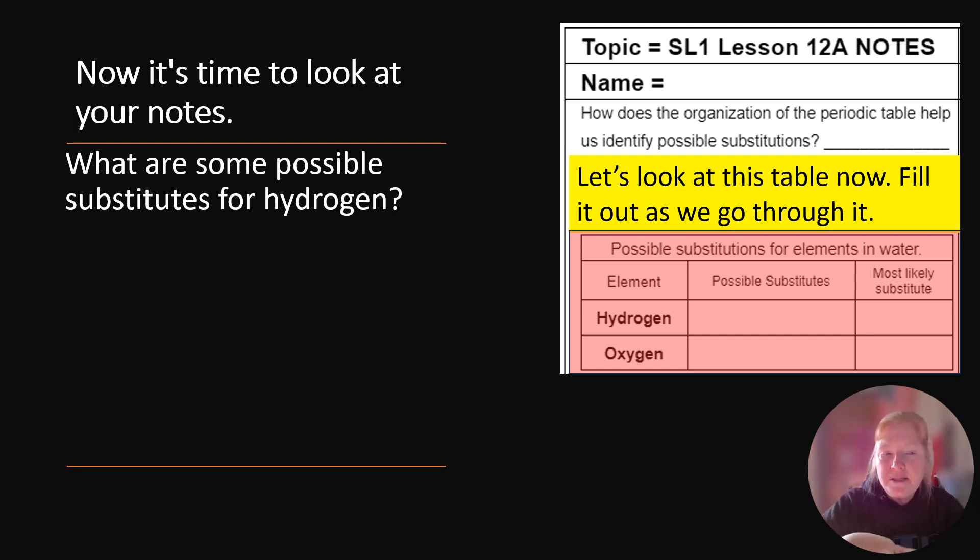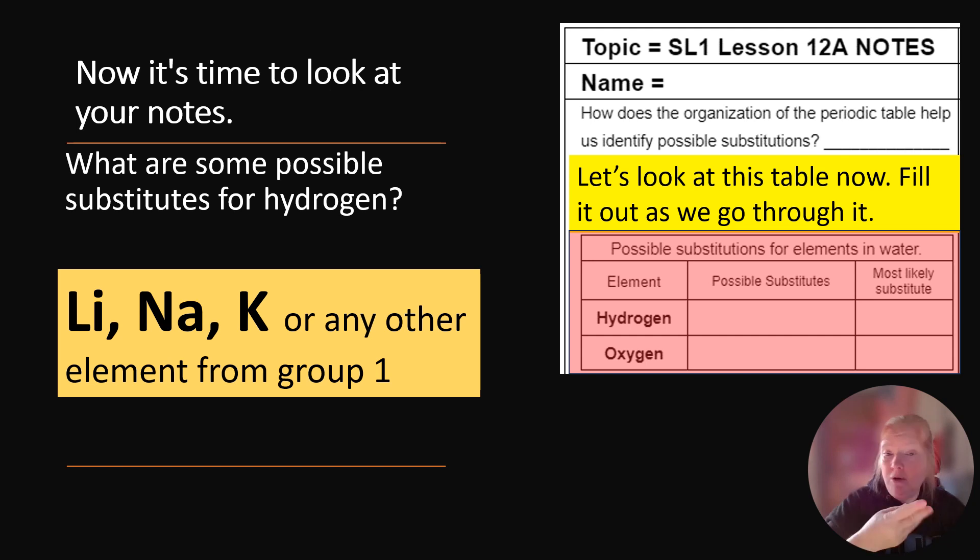So what are some possible substitutes for hydrogen? So look at the periodic table. What do you think? What could be some possible substitutes for hydrogen? Well, we have these three as an example: Li, Na, K, or any other element located in group one, which is where we find hydrogen.